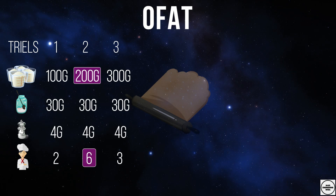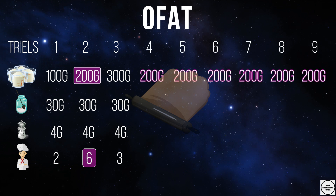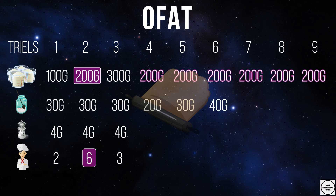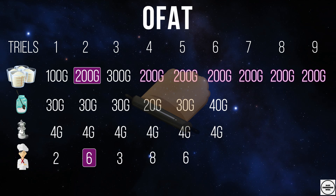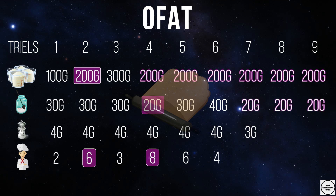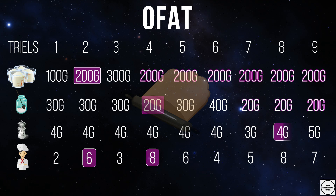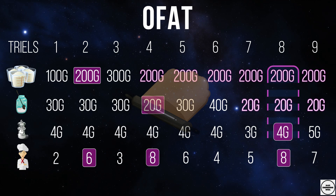Once the first factor is examined it's kept at its new level and the next factor varies, which in this case is the yeast, and the salt is still constant. After we change the amount of yeast we repeat the same for the salt. So at the end of nine trials we get the closest values to the optimum, which in this case is 200 grams of flour with 20 grams of yeast and 4 grams of salt.